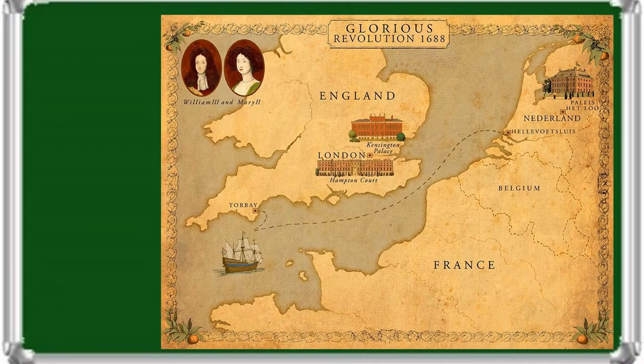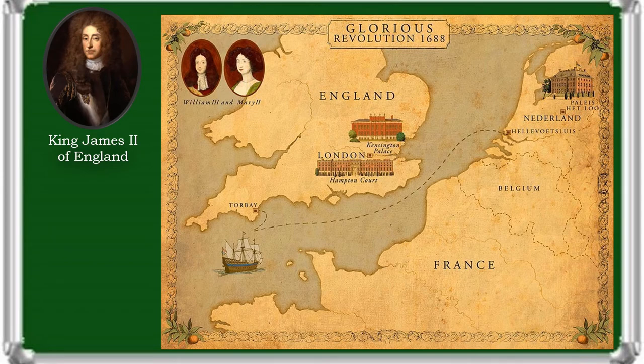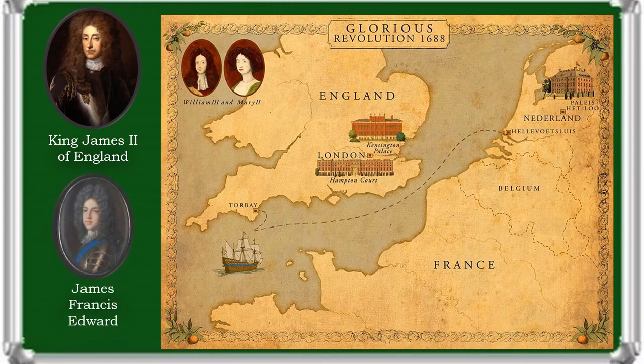The Glorious Revolution, or Revolution of 1688, was the deposition and subsequent replacement of James VII as ruler of England, Scotland, and Ireland by his daughter Mary II, and his Dutch nephew and Mary's husband, William III of Orange. Despite his Catholicism, James became king in February 1685 with widespread support, because many feared excluding him would lead to a repetition of the English Civil Wars. His religion was perceived as a short-term issue since his Protestant daughter Mary was the heir to the throne. The birth of his son, James Francis Edward, on the 10th of June 1688, changed this by raising the prospect of a Catholic dynasty.